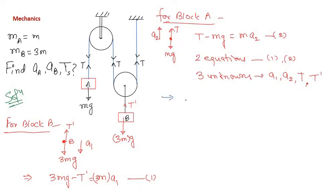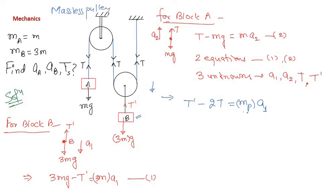Writing the equation for the movable pulley: T' − 2T = mass of pulley × acceleration of pulley. Since all pulleys are massless, the mass is zero, so T' = 2T. This gives us a relation between T' and T, reducing the number of independent unknowns by one.